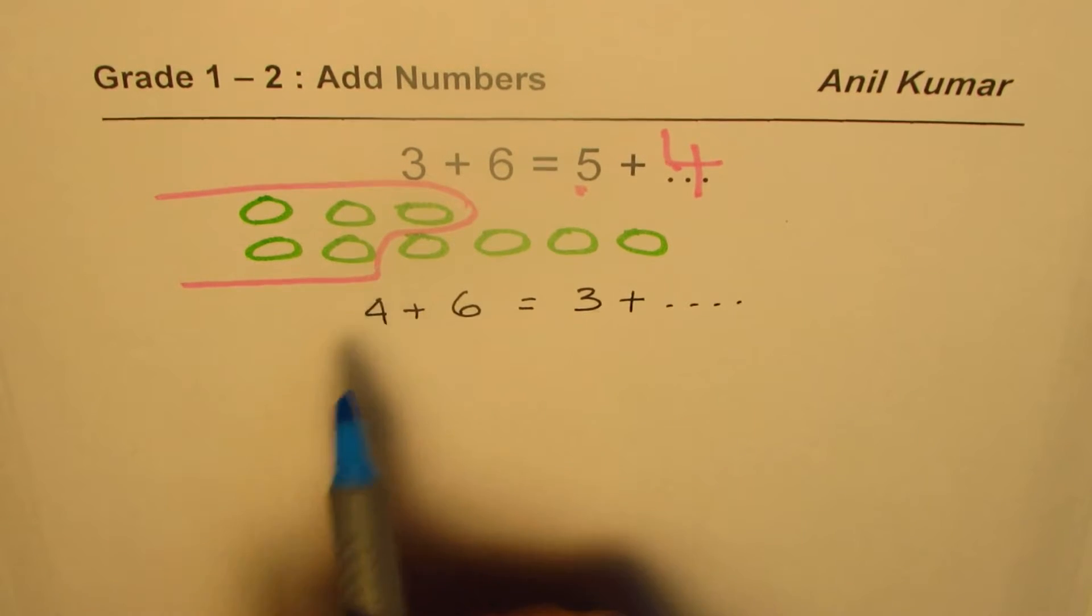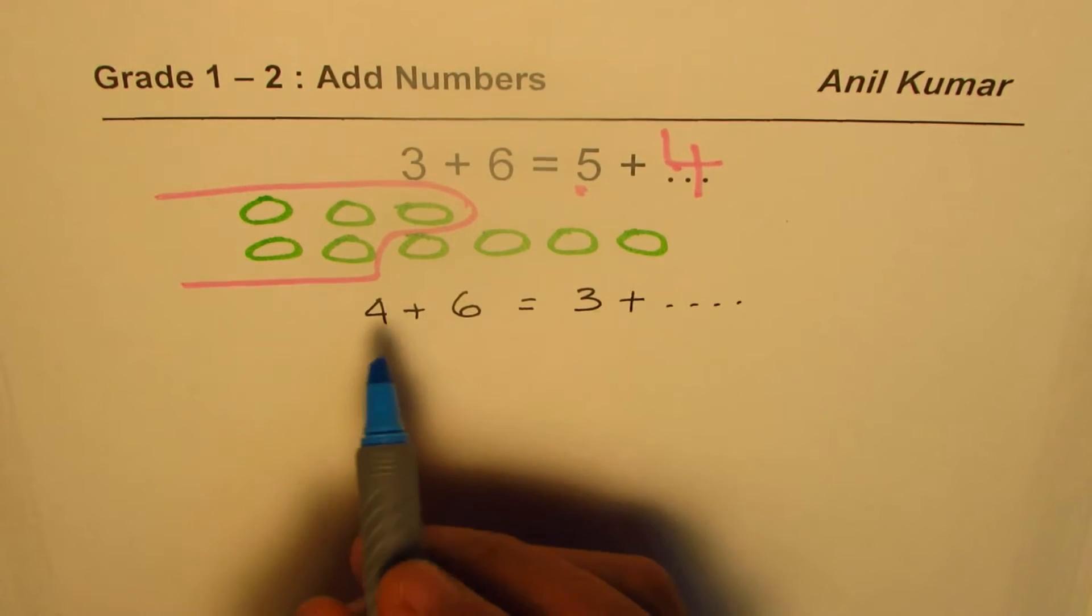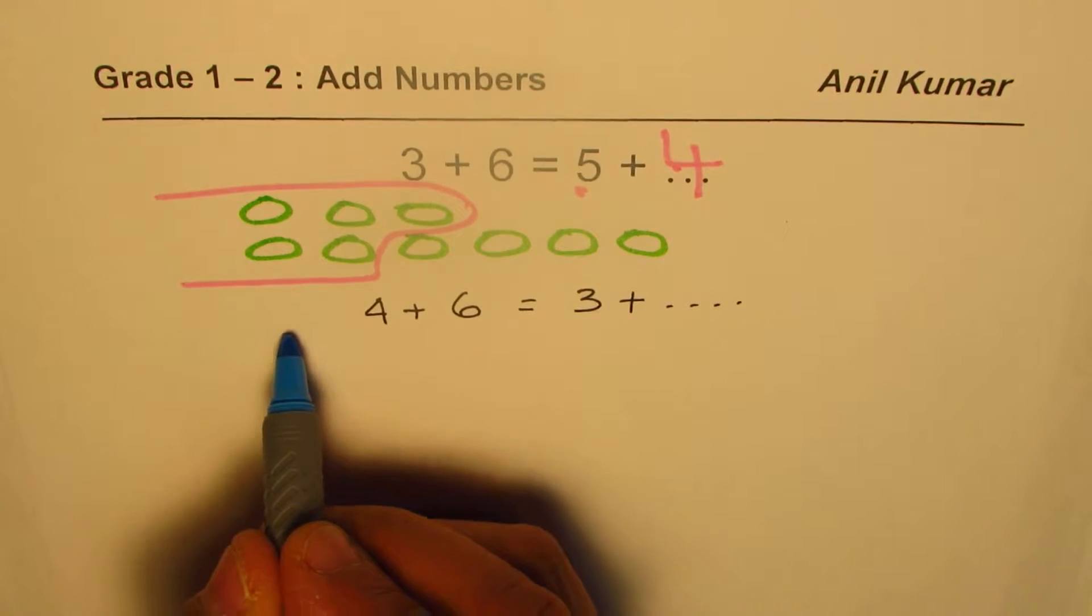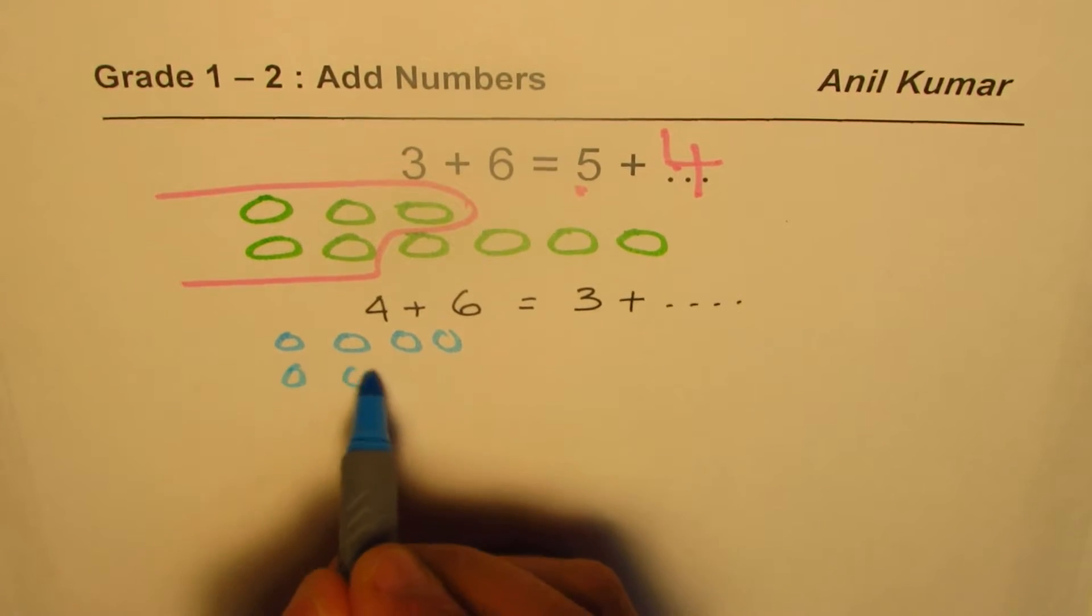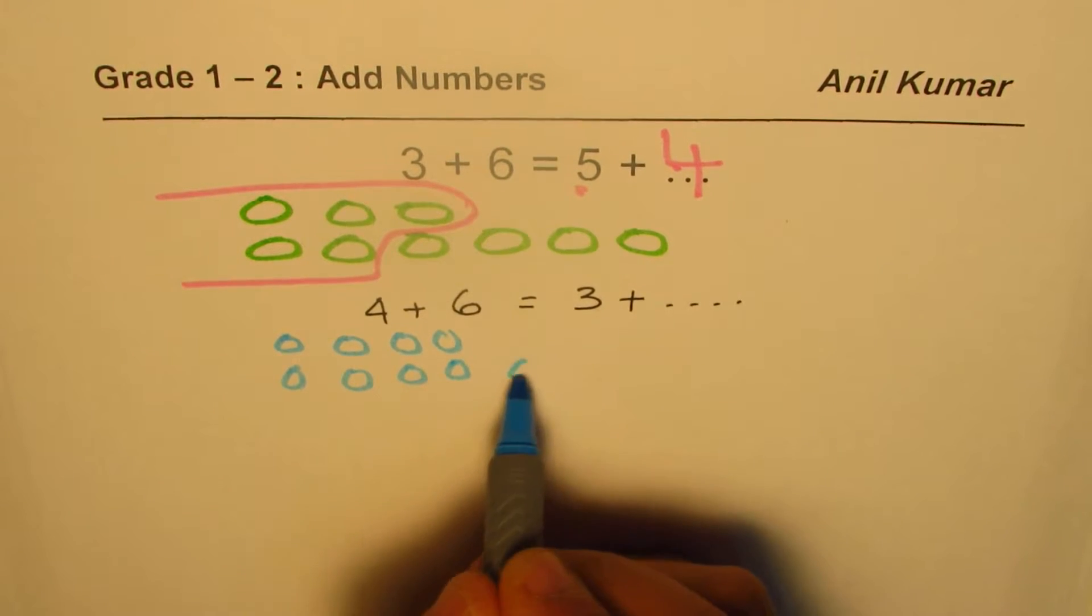Let's begin making some shapes of similar kind. Four means one, two, three, four. Add six: one, two, three, four, five, six.